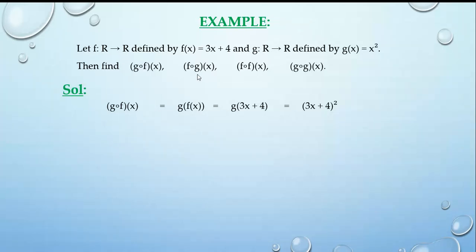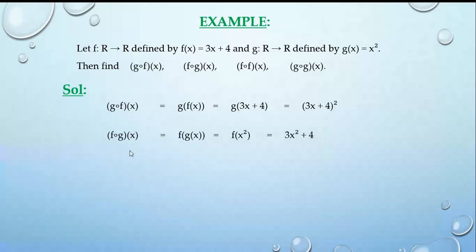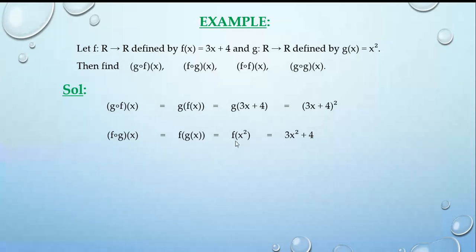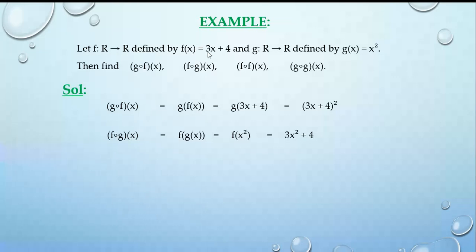For f(g(x)): g(x) = x², so we substitute into f — f(x²) = 3x² + 4. In f, wherever we see x, we replace it with x², giving 3x² + 4.